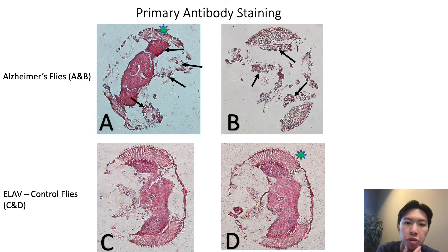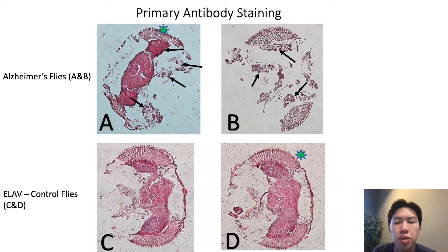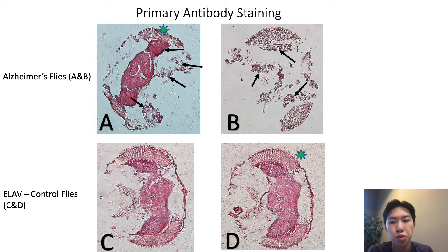The primary antibody staining slides really begin to highlight those specific proteins and aggregates that we were hoping to find. The top two figures, A and B, were our Alzheimer's flies, and the bottom two figures, C and D, were our ELOF control flies. All four of these samples were stained with the same 7M22 primary antibody targeting A-beta peptides specifically.